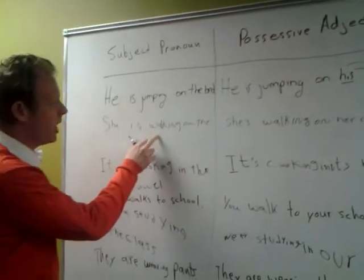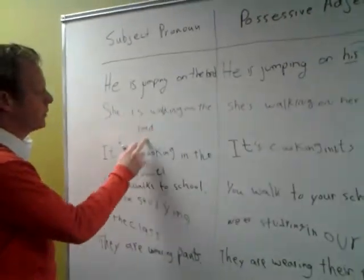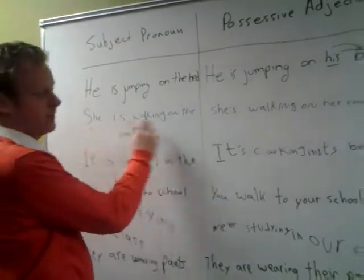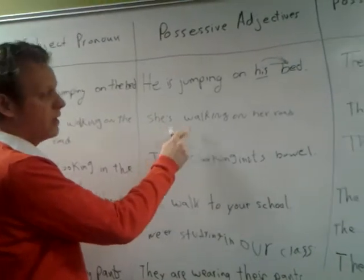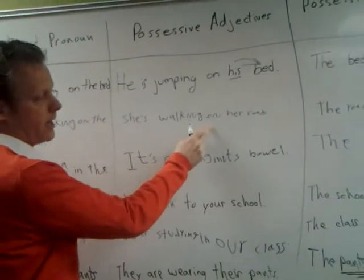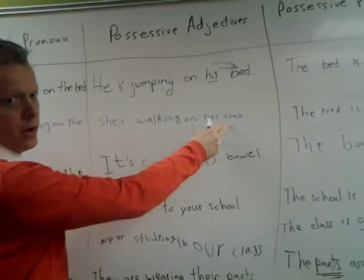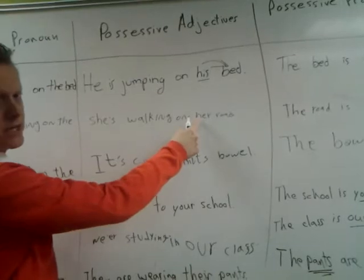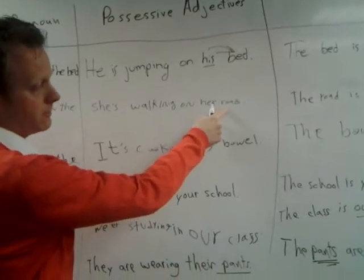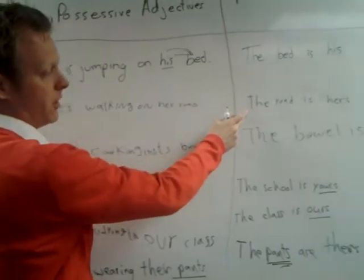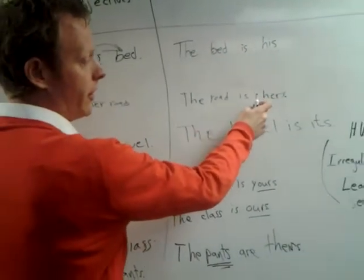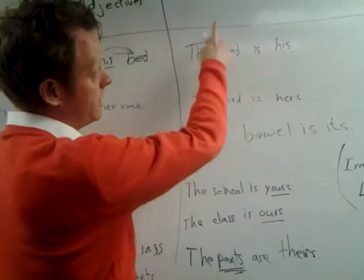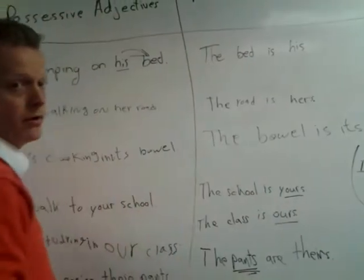'She is walking on the road.' She is a subject pronoun. 'She is walking on her road.' Her is a possessive adjective defining the road. 'The road is hers.' Hers is by itself, so it is a possessive pronoun.